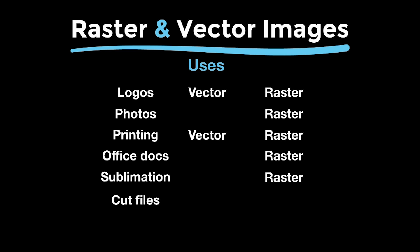Cut files for cutting machines like Cricut or Cameo need to be SVG files or DXF, which is a lesser-used vector file type. That way the cutting machine can see the lines and know where to cut. Most cutting machines now have software that can convert a raster image to a vector one for cutting, though it just might not look that pretty. Finally, for the web, you can use JPEG or PNG, which are raster, but as mentioned, SVG is becoming more and more widely used now.